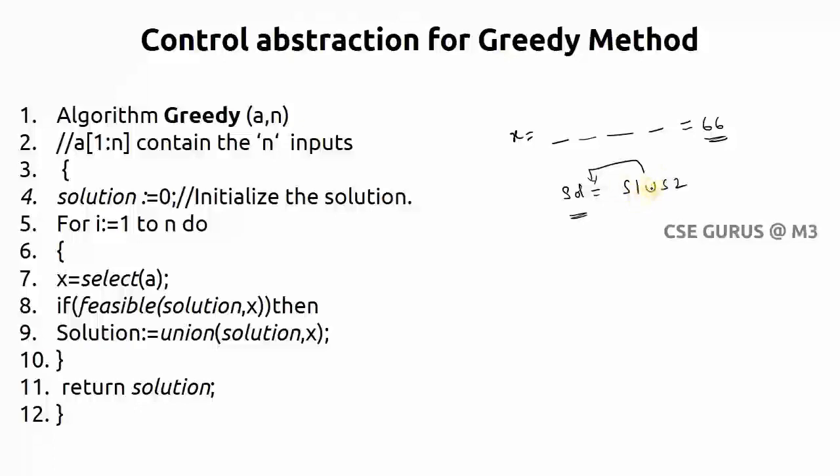In our example which minimizes that will go to solution. In some problems if which is the maximum value that will go to the solution. Like this, finally after n number of iterations you will get a solution which is optimal one that has to be returned here.